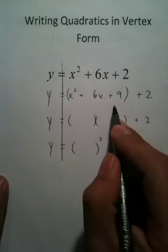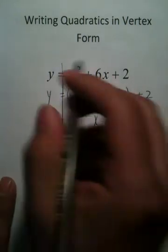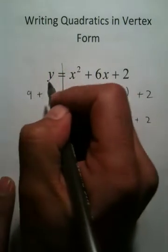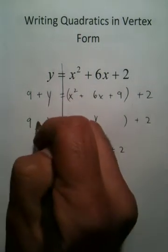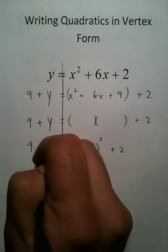And what I've done is I've added 9 to this side of the equation. Now you must add 9 to this side of the equation. That's the property of equality. So this positive 9 stays here this whole time.